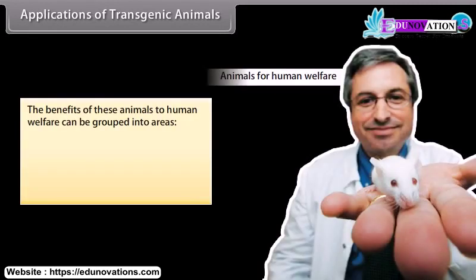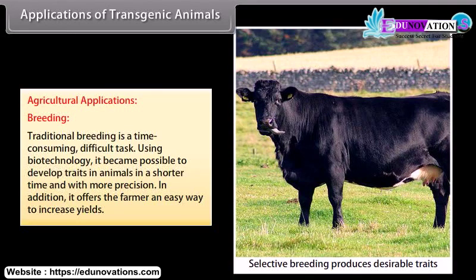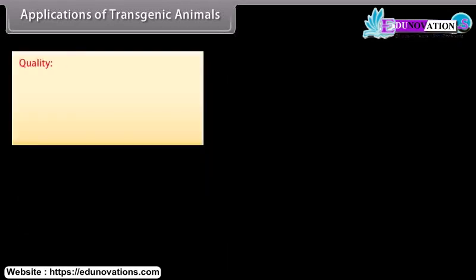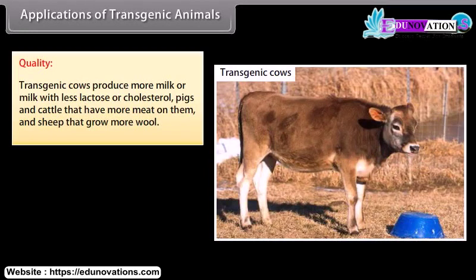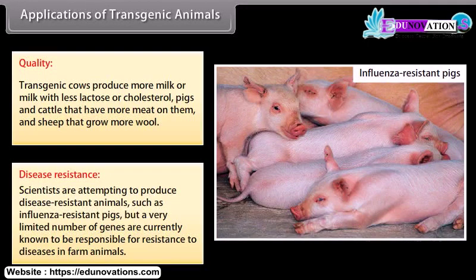The benefits of transgenic animals to human welfare can be grouped into Agriculture, Medicine, and Industry. Agricultural Applications — Breeding: Traditional breeding is a time-consuming, difficult task. Using biotechnology, it became possible to develop traits in animals in a shorter time and with more precision, offering farmers an easy way to increase yields. Quality: Transgenic cows produce more milk or milk with less lactose or cholesterol, pigs and cattle have more meat, and sheep grow more wool. Disease Resistance: Scientists are attempting to produce disease-resistant animals such as influenza-resistant pigs, though a very limited number of genes are currently known to be responsible for resistance to diseases in farm animals.